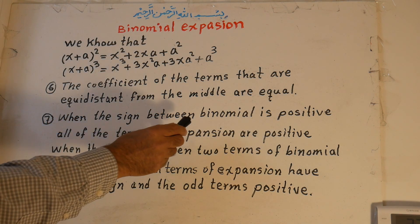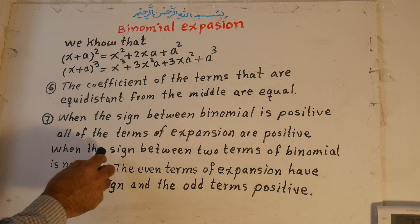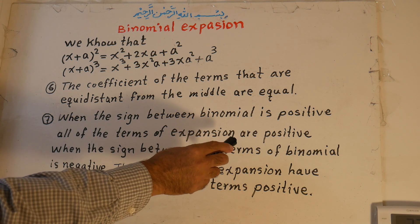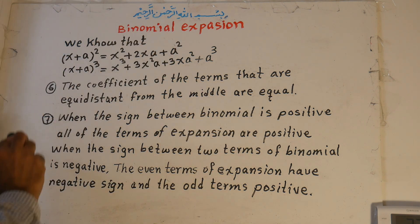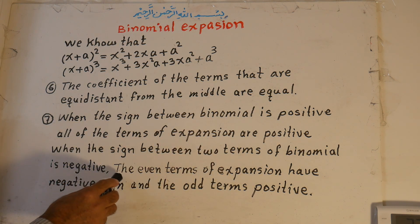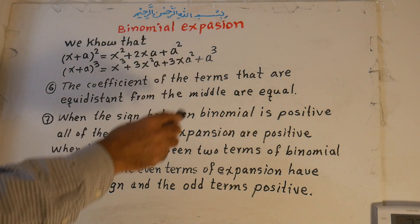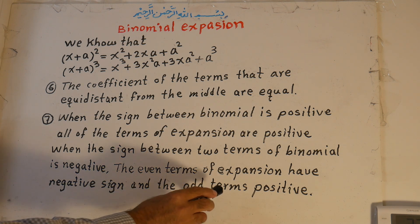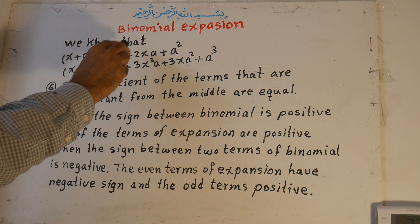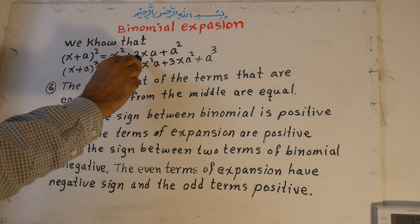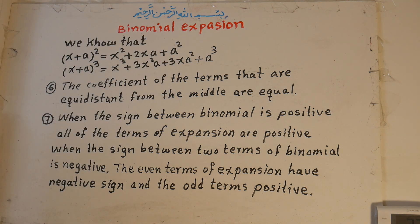Number seven: when the sign between the two terms of the binomial is positive, all of the terms of the expansion are positive. When the sign between the two terms of the binomial is negative, the odd-numbered terms — term 1, 3, 5 — are positive, and the even-numbered terms — term 2, 4, 6, 8 — are negative.